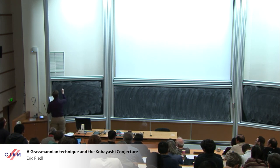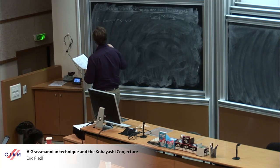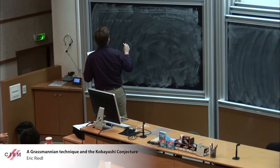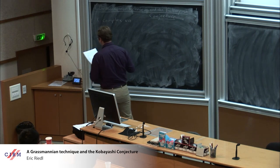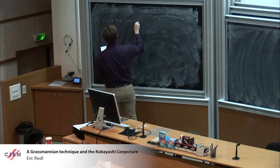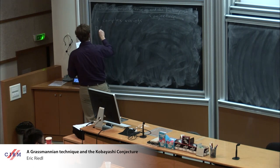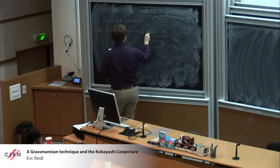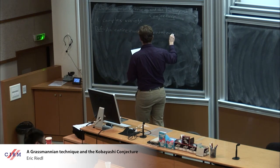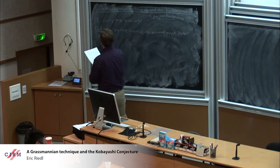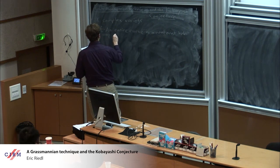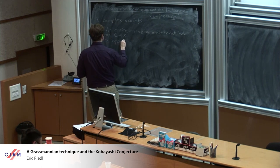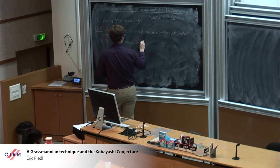Let X be a complex variety. An entire curve is a non-constant holomorphic map from C. We say that X is Brody hyperbolic if it contains no entire curves.